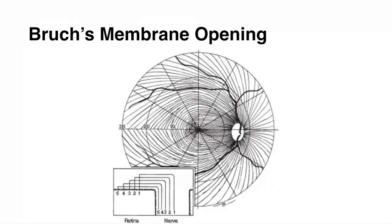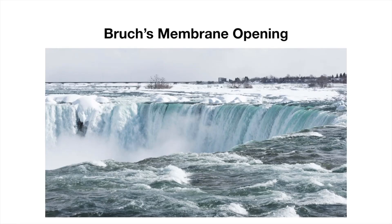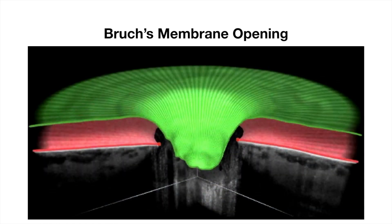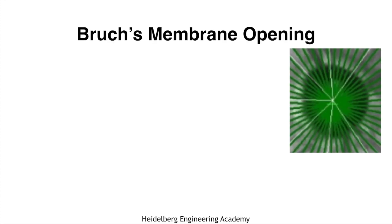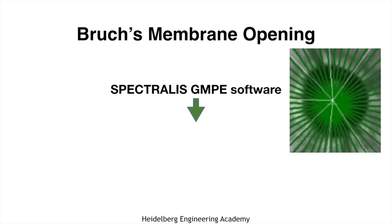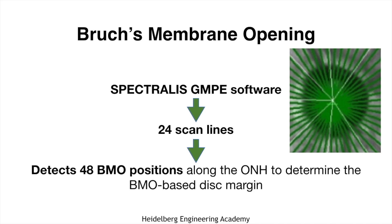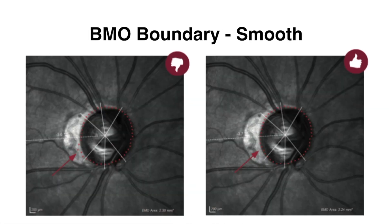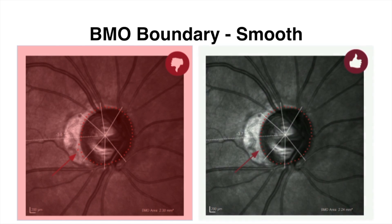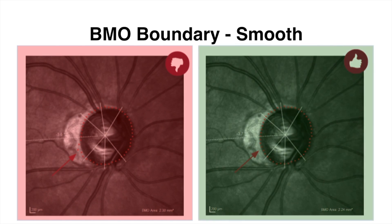Bruch's membrane opening: imagine the retinal nerve fiber layer projecting into the optic disc like water falling into a waterfall — this helps in understanding the concept. With the Spectralis Glaucoma Module Premium Edition software, there are 24 scanned lines, so totally 48 BMO positions are detected along the optic nerve head to determine the BMO-based disc margin. The BMO-based disc margin should be smooth; an irregular margin indicates an erroneously performed test.